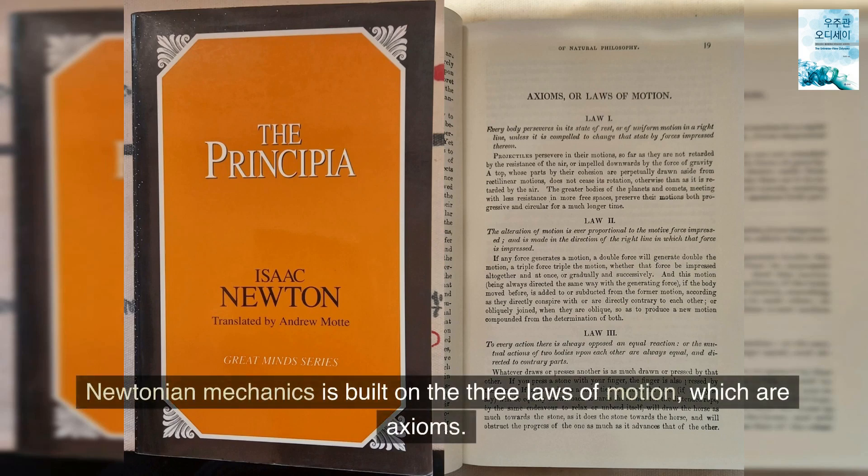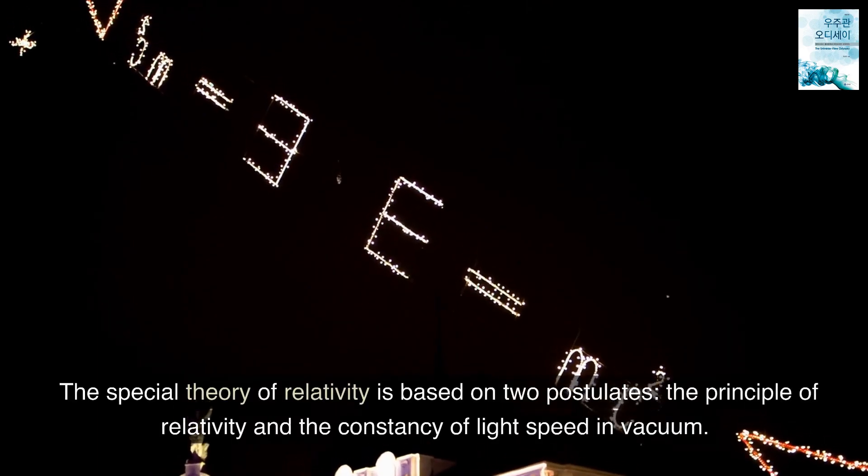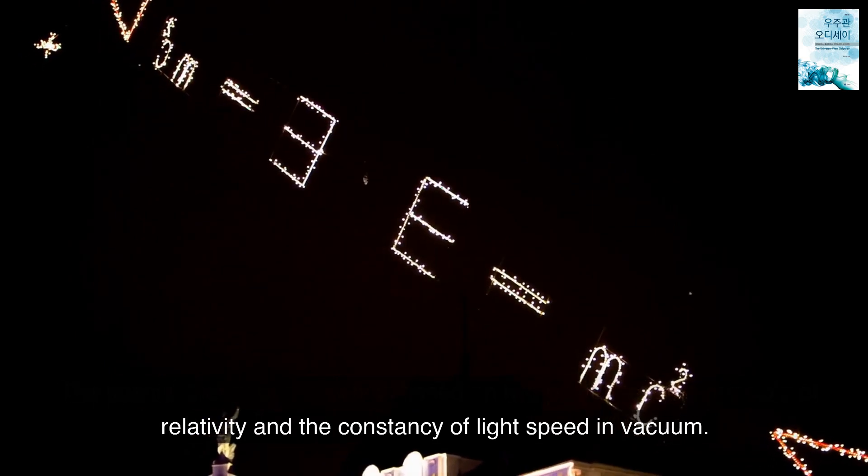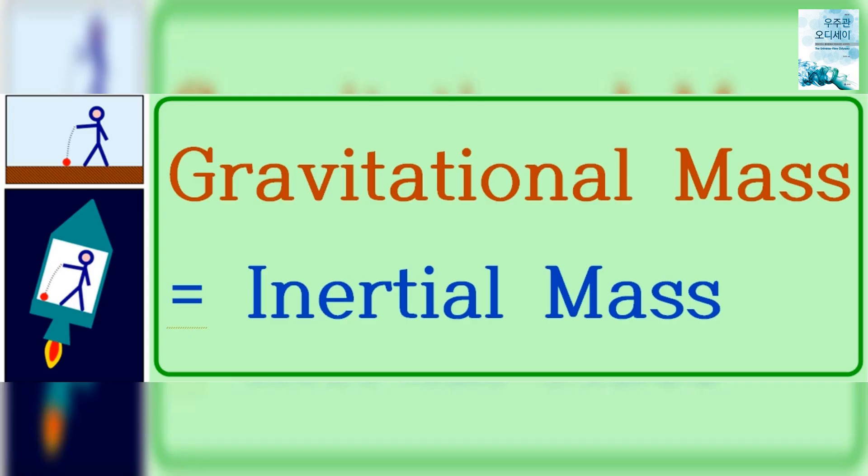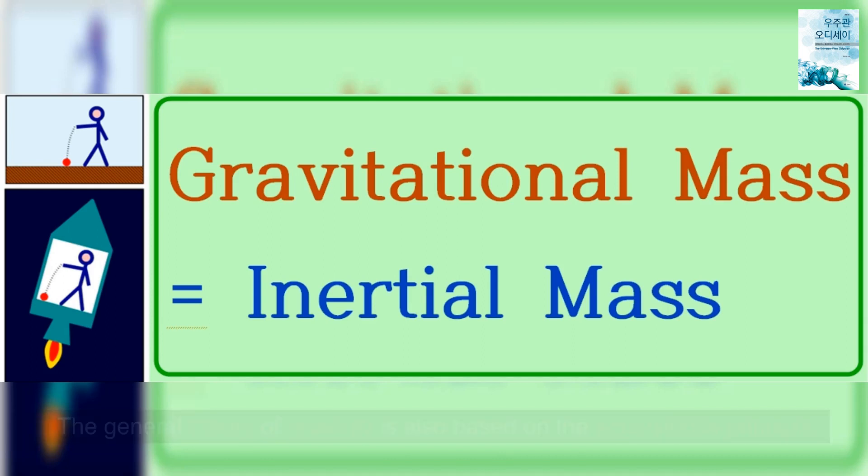Newtonian mechanics is built on the three laws of motion, which are axioms. The special theory of relativity is based on two postulates: the principle of relativity and the constancy of light speed in vacuum. The general theory of relativity is also based on the equivalence principle.